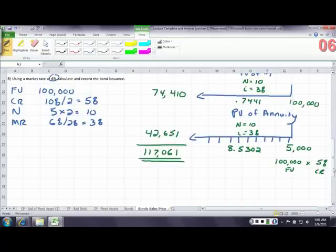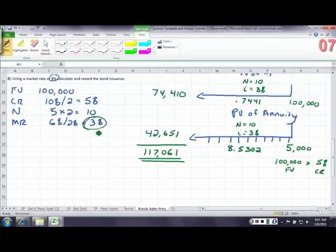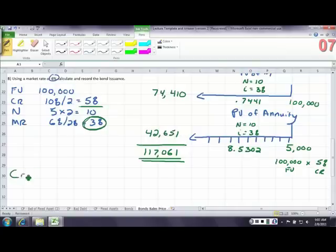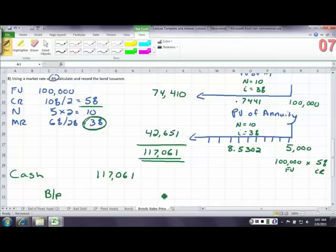Now why would you do that? Well, look, the market is paying 3, so that's what everybody else is paying, but we're paying more. So we're going to debit cash for the sales price, which we just determined. We're going to credit bonds payable for the legal value. The difference between the two is going to be a premium, because we sold the bonds for more.